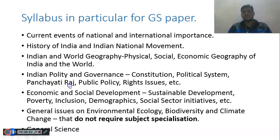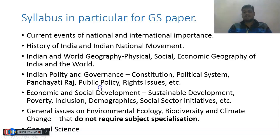Then Panchayati Raj institutions — we can also call this local self-government. Due to the 73rd and 74th Constitutional Amendment Acts, these institutions were established, and that needs to be studied. Next, public policies — policies that the government makes for the welfare of the people. For example, PDS — Public Distribution System — is a type of public policy where food is provided at a subsidized rate to below-poverty-line people. Similarly, there are many other public policies that need to be read under the section of Indian Polity.